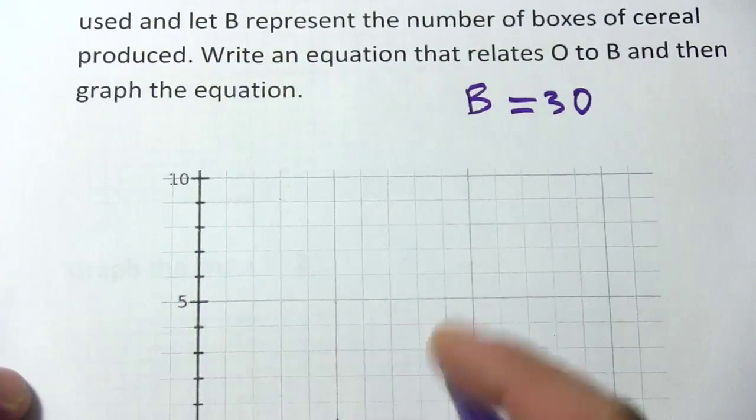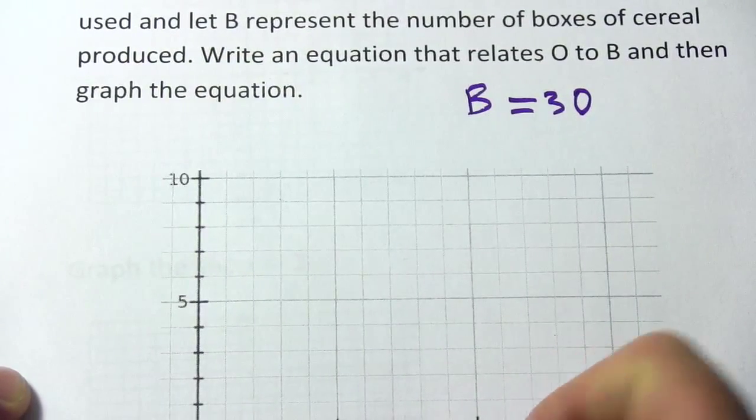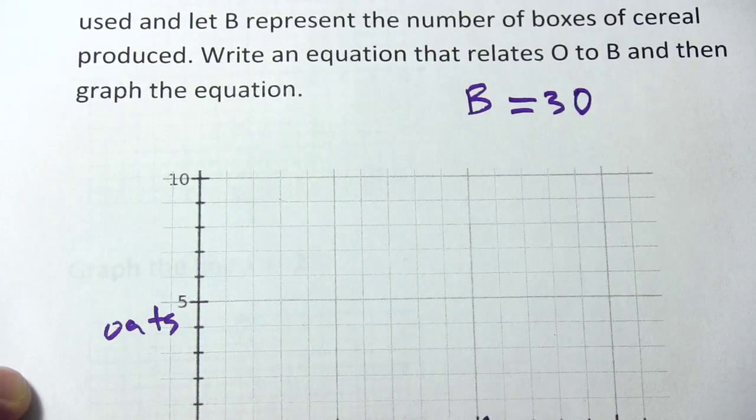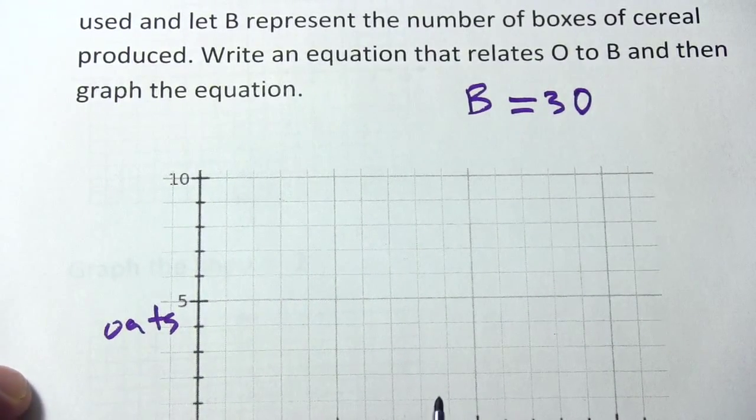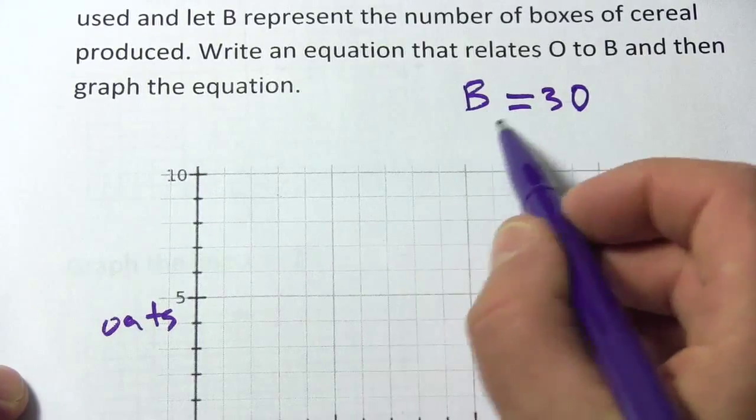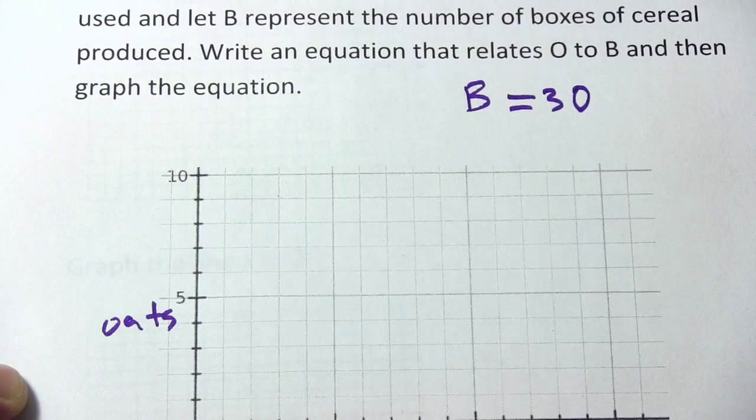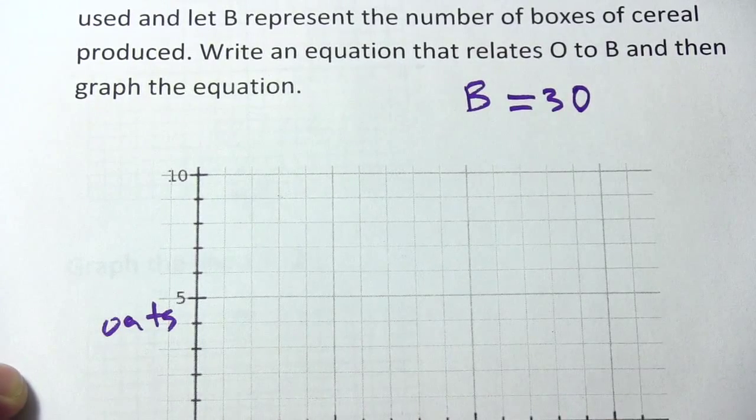Well, let's see. Let's put boxes over here and oats over here. We can really just do a table. So we've got O and then we've got B, which is three times O.